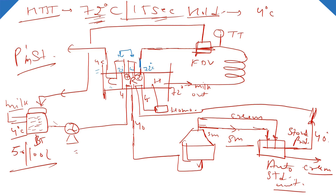In the cooling section, cooling is done using cold water or glycol water. Cold water in and cold water out are connected to this section. Similarly, in the heating section, milk is heated from 65°C to 72°C using hot water. Hot water in and hot water out are circulated. The hot water temperature is around 76-78°C, and cold water temperature is around 1-2°C.